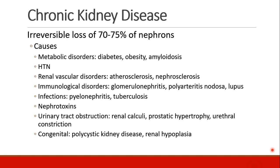Now that's acute kidney injury. We can also talk about chronic kidney disease. These are people who have lost about three quarters of their nephrons, and the loss is irreversible. There are many different causes of chronic kidney disease: metabolic disorders like diabetes, obesity, and amyloid; hypertension; renal vascular disorders like atherosclerosis and nephrosclerosis; immune disorders; infections; nephrotoxins; post-renal obstructions; and congenital disorders.